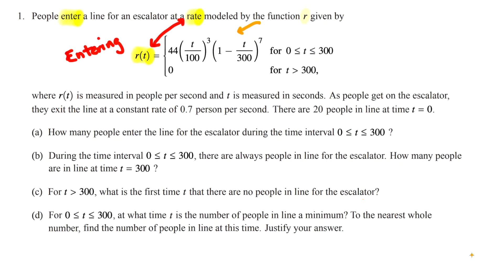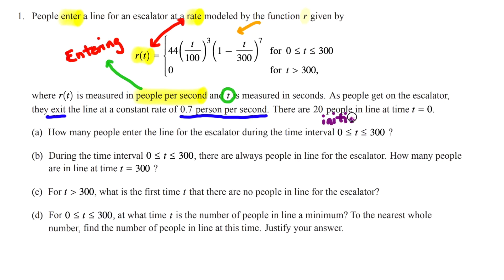R of T is measured in people per second, and T is measured in seconds. Additionally, people exit the escalator at a constant rate of 0.7 people per second — think of that as negative since they're leaving. Initially at T equals 0, there are 20 people in line. Keep track of that initial value because you'll need it later.